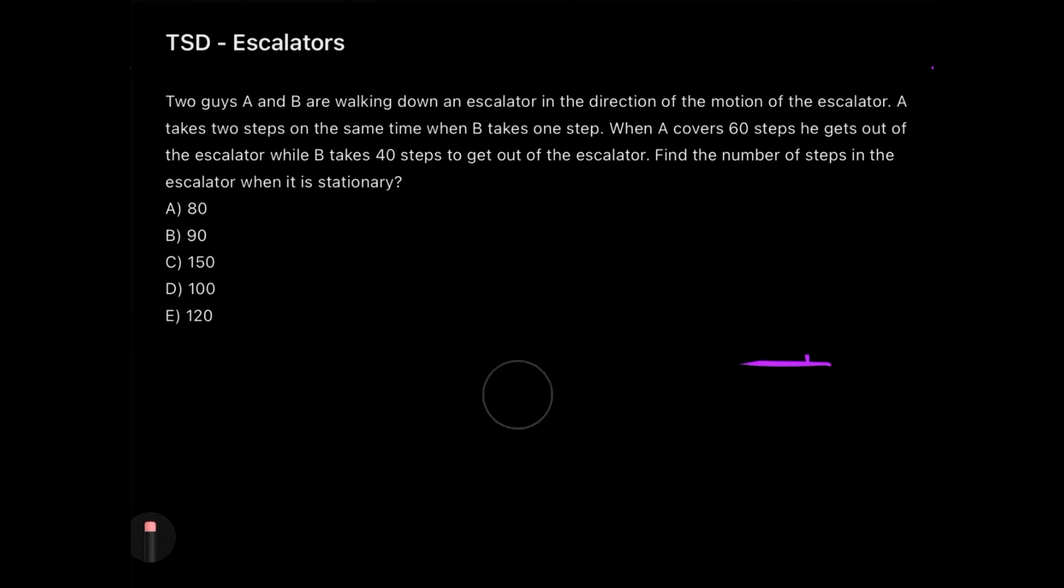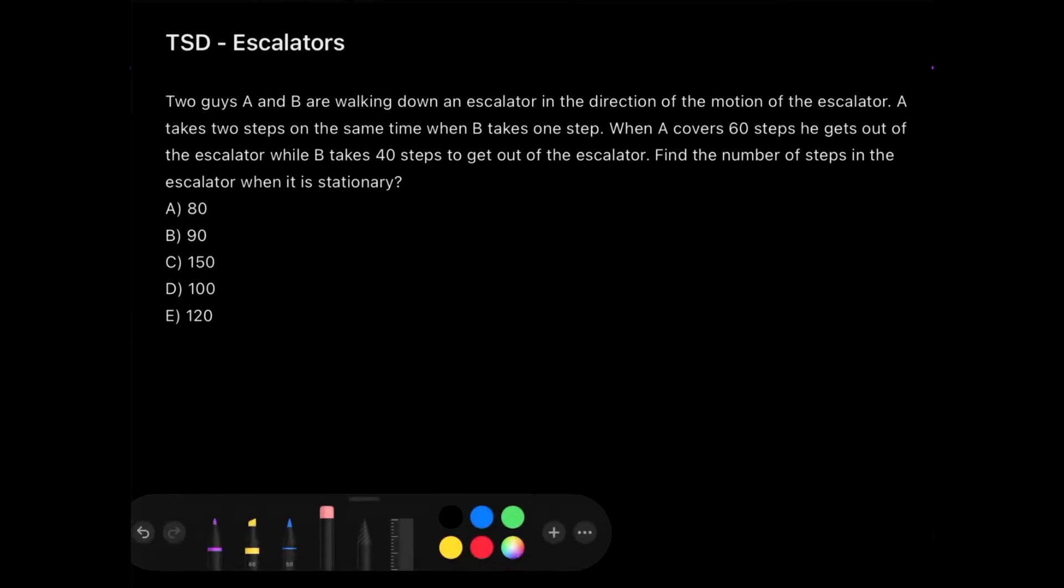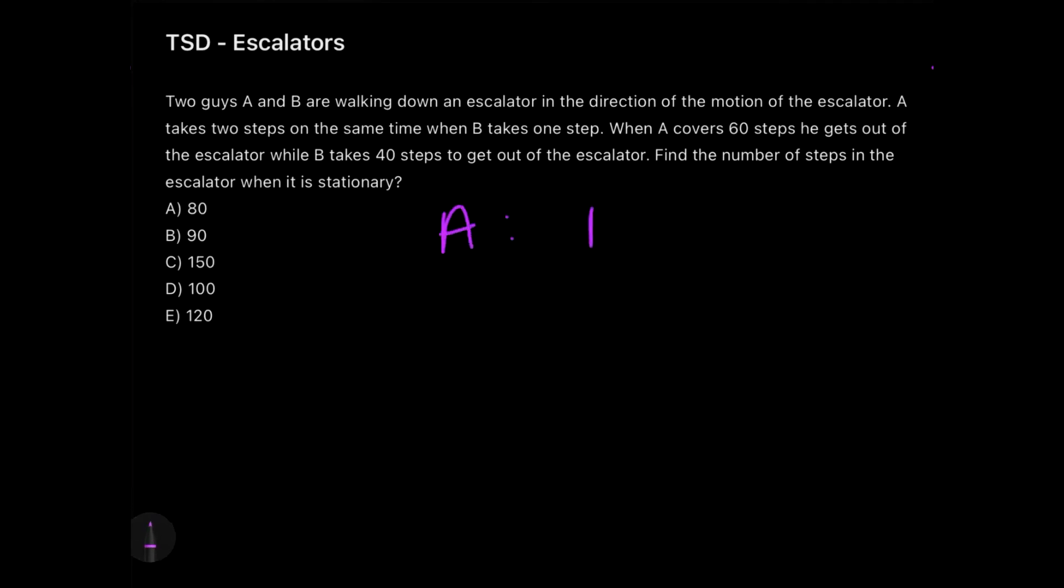So let's quickly jump down to the easier method of doing this question. Now I have taken the complexity of including two guys over here along with the change in the escalator. Now how will I understand that the escalator is changing and not constant? Generally we see that there are two people, and in the two scenarios we have conditions given to us.